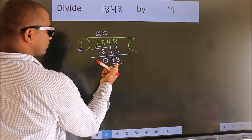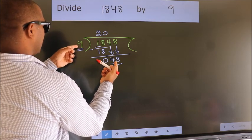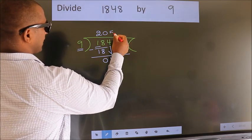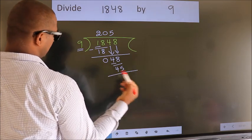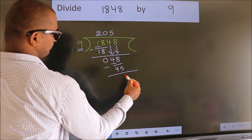A number close to 48 in the 9 table is 9 times 5 equals 45. Now we subtract. We get 3.